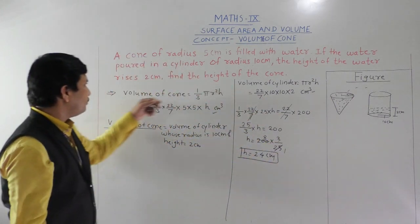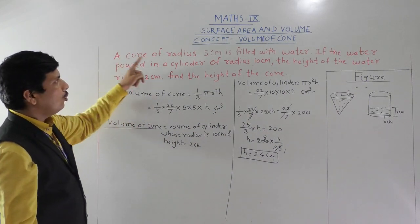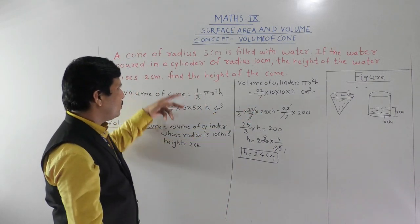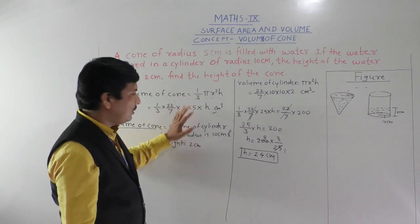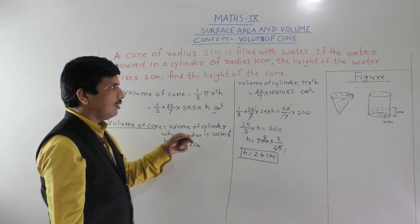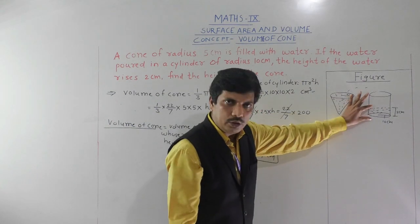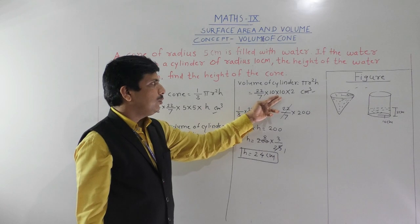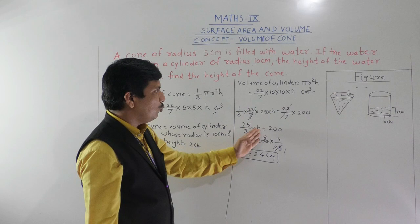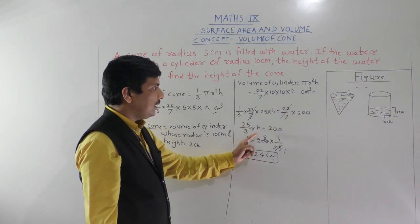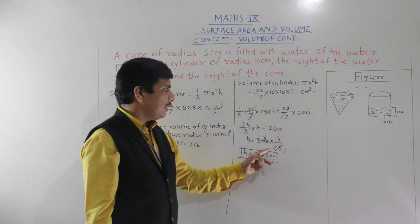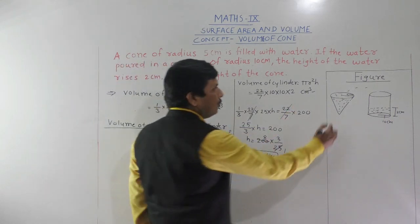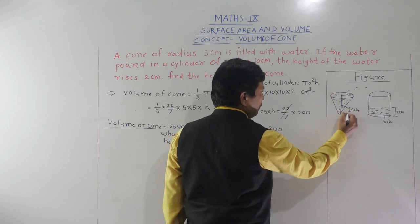To recap Problem 2: a cone of radius 5 cm was given. Height was unknown — that was the question. We set volume of cone equal to volume of the cylinder whose radius is 10 cm and height is 2 cm. After cancelling 22/7 from both sides, we solved for h and got the height of the cone as 24 cm.